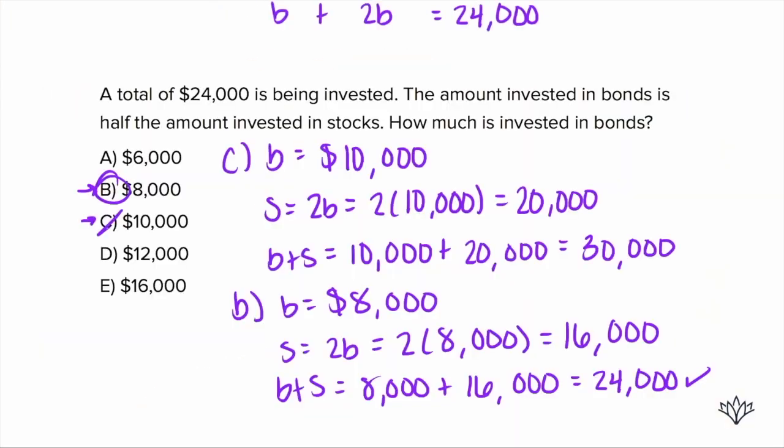So now what can we do? B plus 2B is $24,000. 3B is $24,000. Divide both sides by 3 and we get bonds is $8,000, which confirms what we had. Remember, you can use either of these methods to get the problem right.